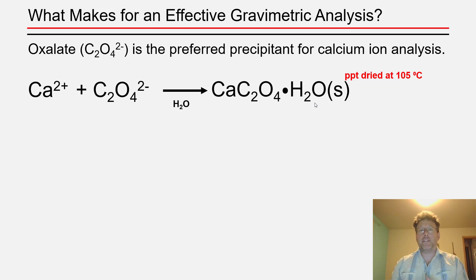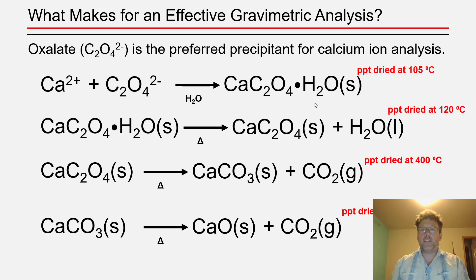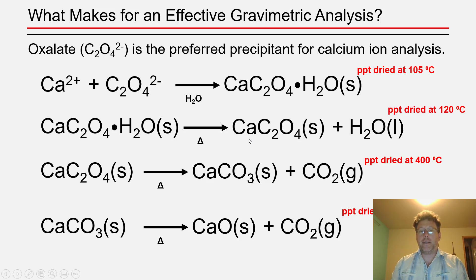In this gravimetric analysis, like many others, the temperature and time for which you dry the precipitate are really crucial to determining the chemical nature of your product. If you dry calcium oxalate monohydrate at a slightly higher temperature, say 120°C, you'll drive off that single water of hydration, leaving behind anhydrous calcium oxalate solid. There is a typo in the original lecture notes, so please correct that to indicate anhydrous calcium oxalate and the water driven off.